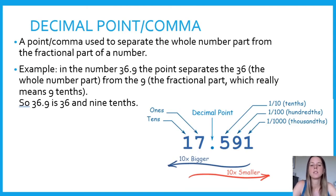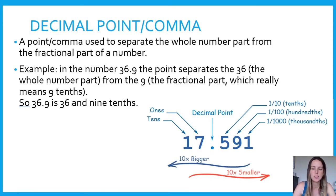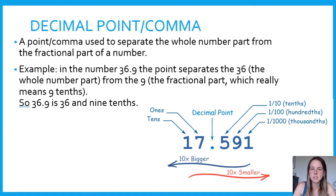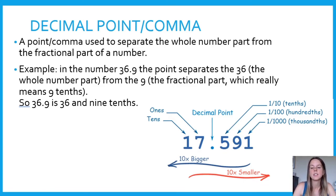Our first topic: decimal point and comma. A decimal point is a point used to separate whole numbers from the fractional part of a number. For example, in the number 36.9, the point separates the 36, which is the whole number, and the 9, which is the fractional part — which is actually just 9 tenths. So 36.9 is equal to 36 and 9 tenths.